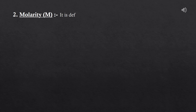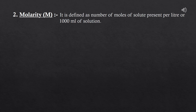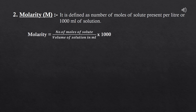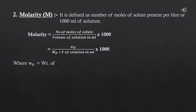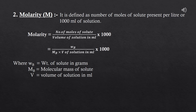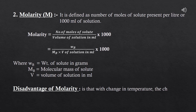The second concentration term is molarity, denoted by capital M. It is defined as the number of moles of solute present per litre (or 1000 ml) of solution. Molarity = (number of moles of solute / volume of solution in ml) × 1000, or symbolically M = (W_B / M_B) × (1000 / V), where W_B is weight of solute, M_B is molecular mass, and V is volume in ml. The major disadvantage of molarity is that with a change in temperature, the volume of solution changes, hence molarity also changes.